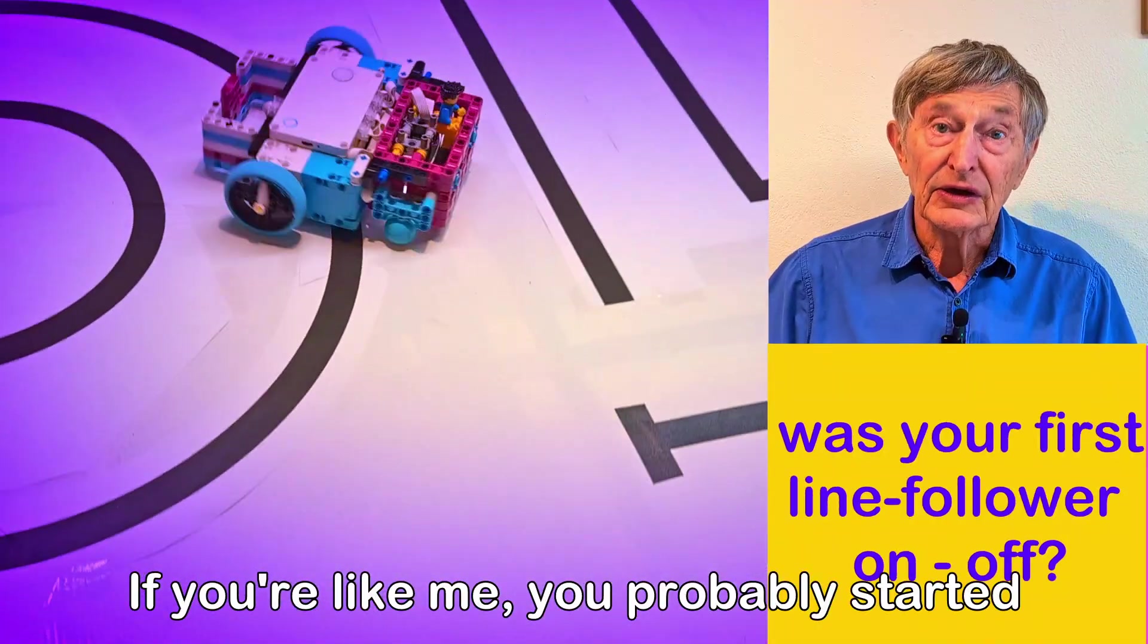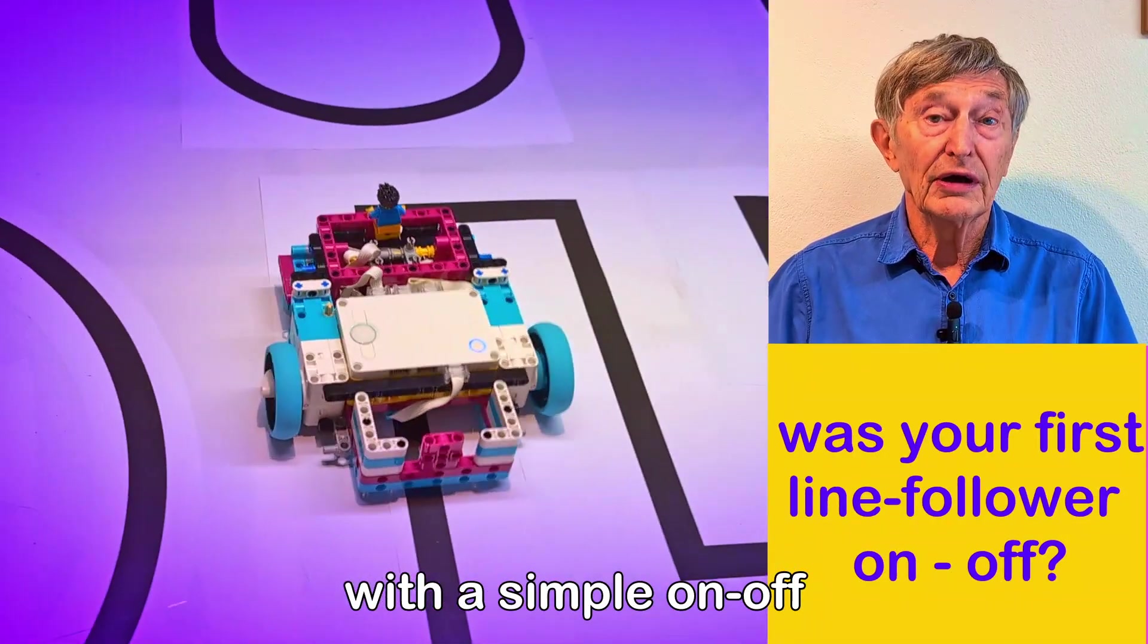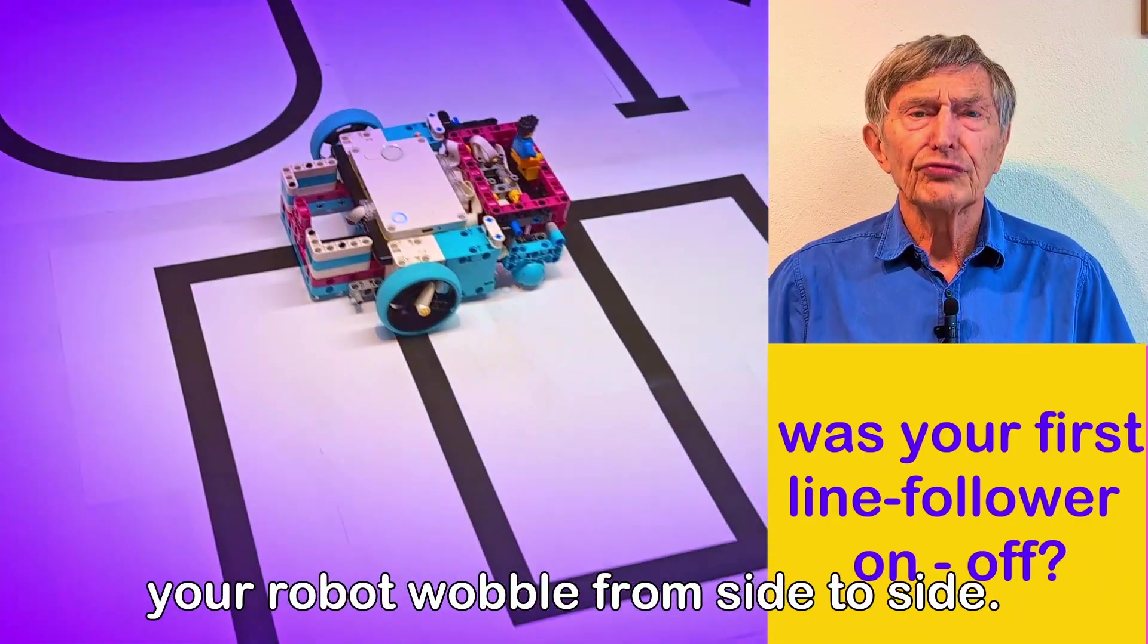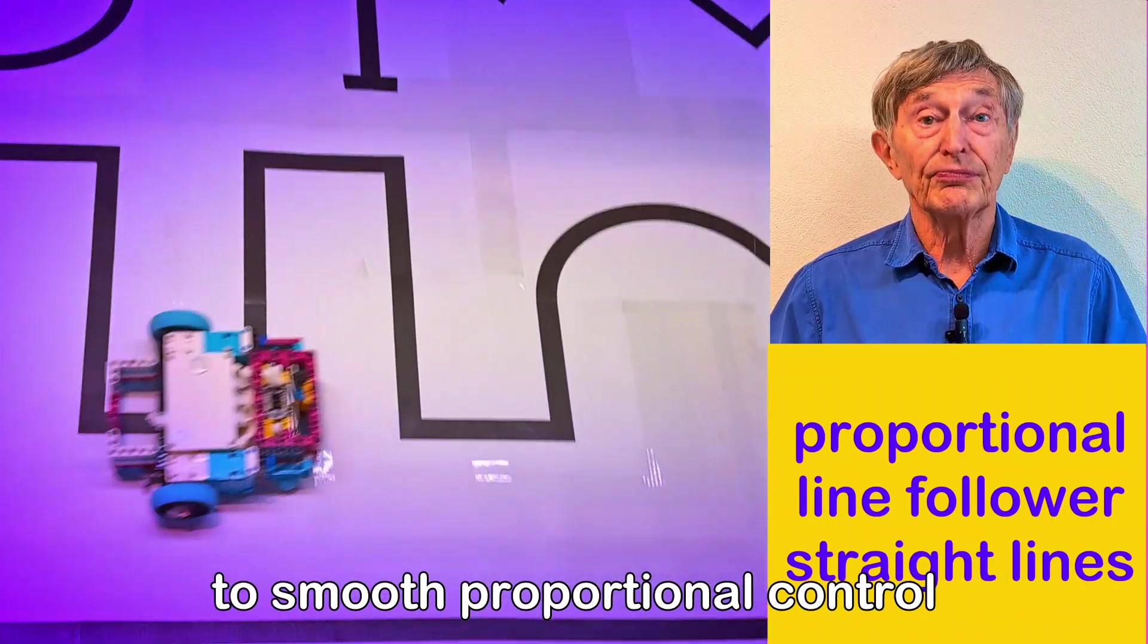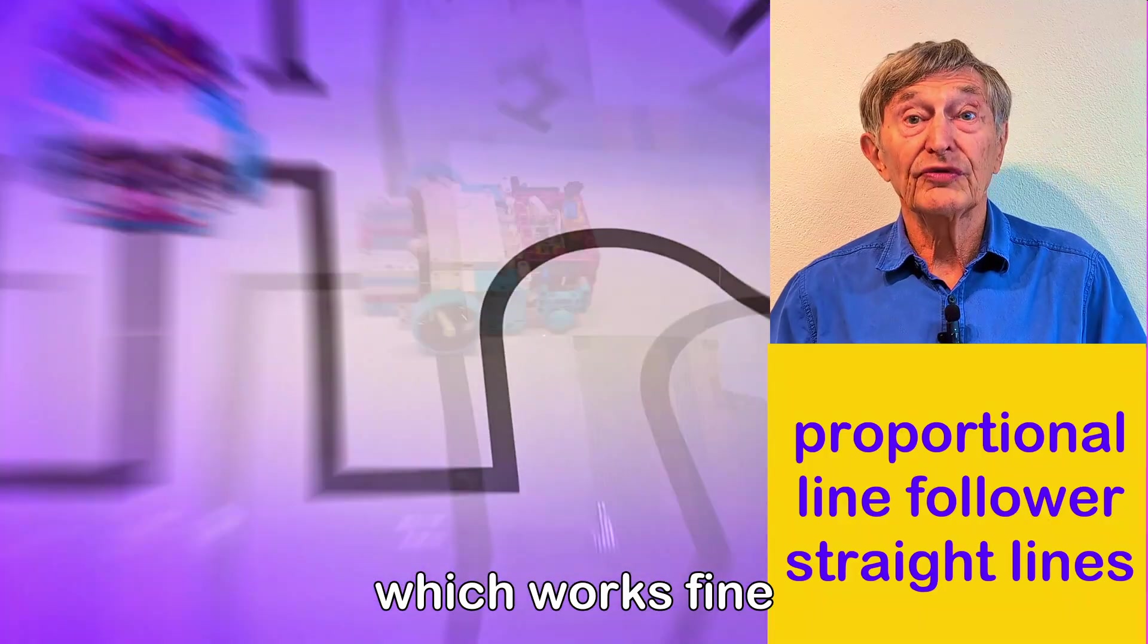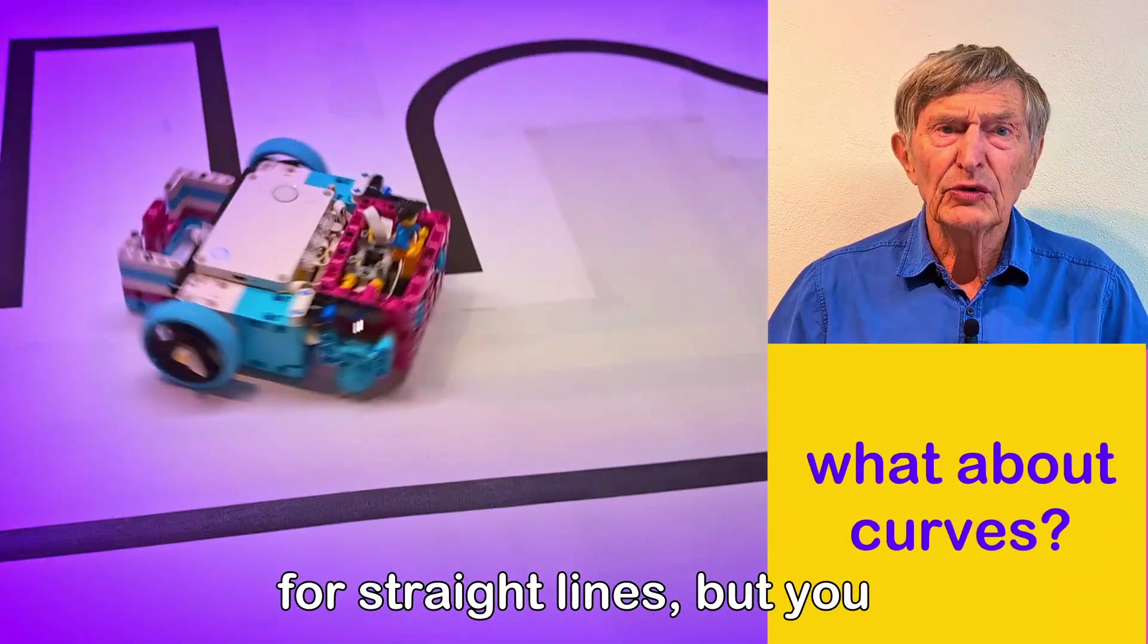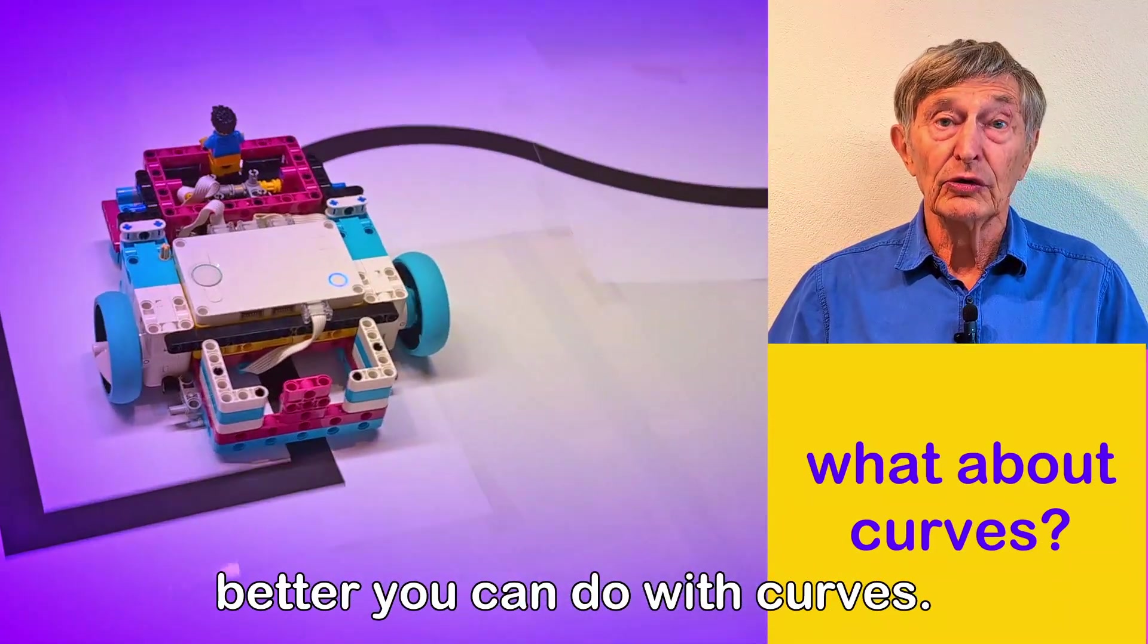If you're like me, you probably started with a simple on-off line follower and watched your robot wobble from side to side. You then upgraded to smooth proportional control, which works fine for straight lines, but you wonder if there's something better you can do with curves.